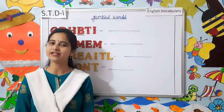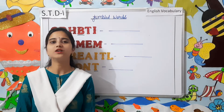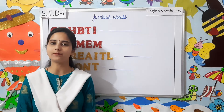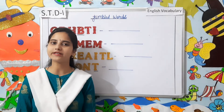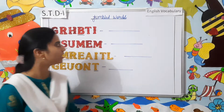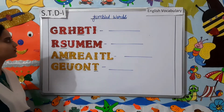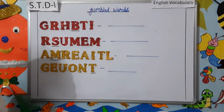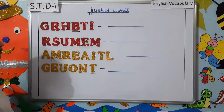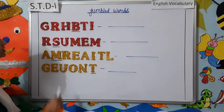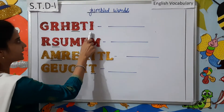Hello students and welcome parents. Today I am going to teach you English vocabulary and we are going to study jumbled words. Look here children, as you can see I have written few jumbled words. As you all know, jumbled means the words which are not arranged correctly.